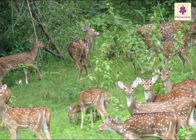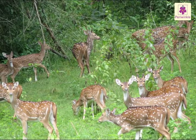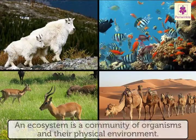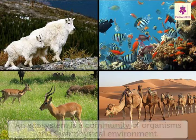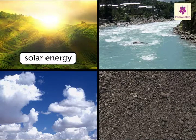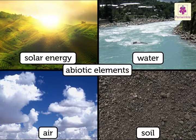Plants and animals are found everywhere on Earth. An ecosystem is a community of organisms and their physical environment. Solar energy, water, air and soil are abiotic elements.